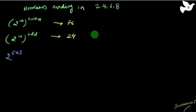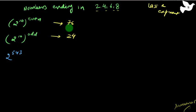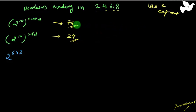We are edging towards the end of this concept. If we have numbers which end in 2, 4, 6, and 8 and we are trying to find the last two digits of an exponent, how do we do it? Firstly, remember something very simple: 2 raised to the power of an even number will always end in 76, and 2 raised to the power of any odd number will end in 24.